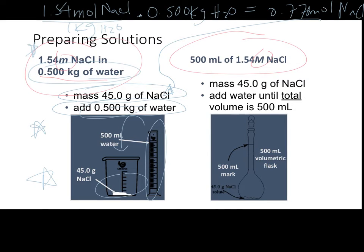Alternatively, we could use a volumetric flask — take the 45 grams of sodium chloride, add it to the bottom of the volumetric flask, then fill incrementally with swirling until we have a 500 milliliter volume. This approach works very nicely if we need exactly 500 milliliters. But if we need something more in between, like 27 milliliters or 120 milliliters, the graduated cylinder approach might be better.